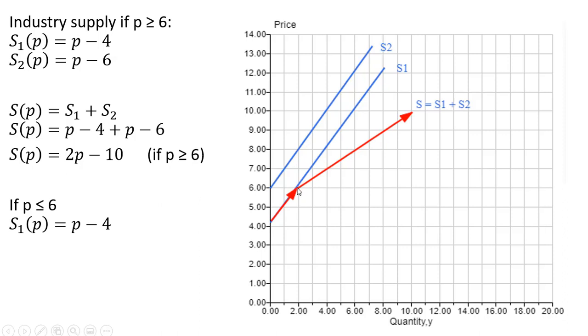So at a price of $6, anything rising above that, Firm 2 will enter the market bringing a positive quantity to the market. The industry supply curve will be illustrated by this red line here, these two red arrows.